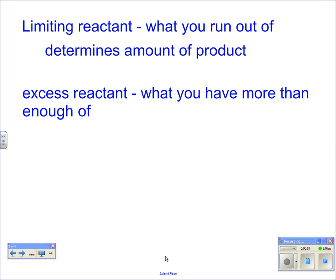The limiting reactant is the one we're usually interested in when we do stoichiometry problems. Up until this point you've only been given one reactant — the limiting one. Now you have to figure out which one is limiting and which one is in excess. The excess is the one you have more than enough of; you'll never run out of it.